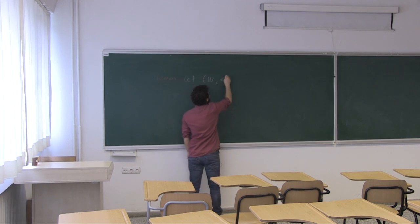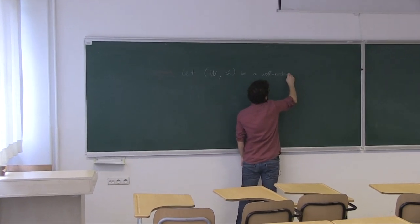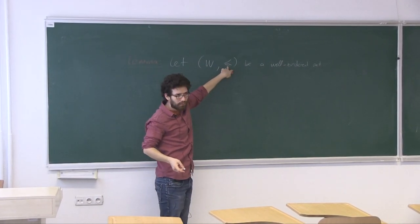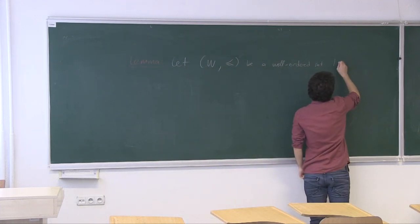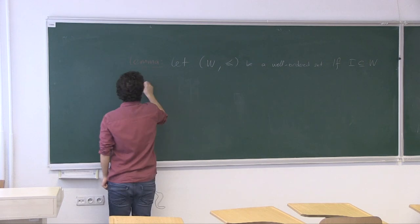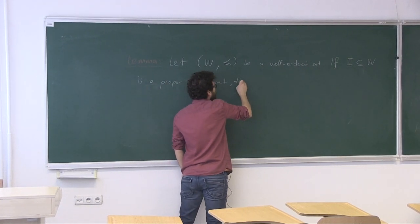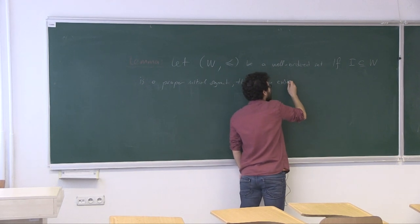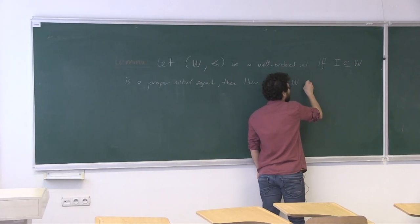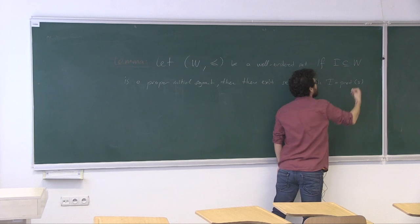Let W = (W, ≤) be a well-ordered set. When I say a tuple is a well-ordered set, I mean this is a set such that ≤ is a well-ordering relation on it. The lemma states: if I is a proper initial segment of W, then there exists some element s in W such that I is the set of predecessors of s.